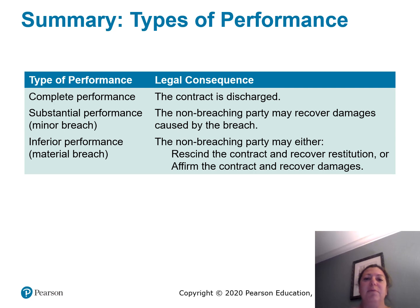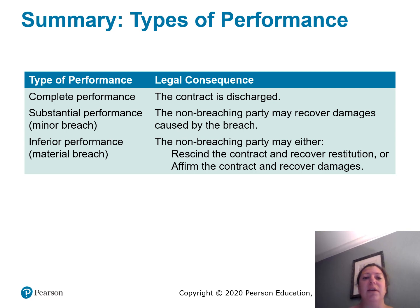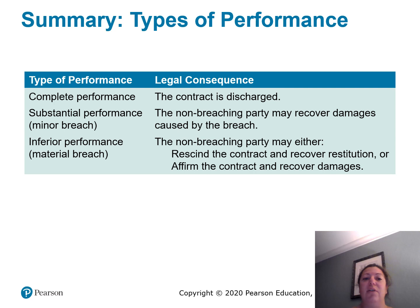In summary, a table identifying the type of performance and its legal consequence is provided. If there is complete performance, the contract is discharged. If there is substantial performance or a minor breach, the non-breaching party may recover damages caused by the breach. If there is inferior performance, which is a material breach, the non-breaching party may either rescind the contract and recover restitution, or affirm the contract and recover damages. This concludes the discussion of types of performance.